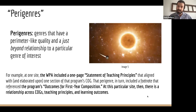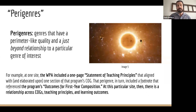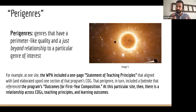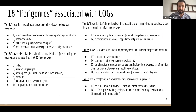18 different para-genres emerged from this inquiry, and I see five tiers — almost like five orbits with varying degrees of gravitational pull. I want to outline them in the next slide.